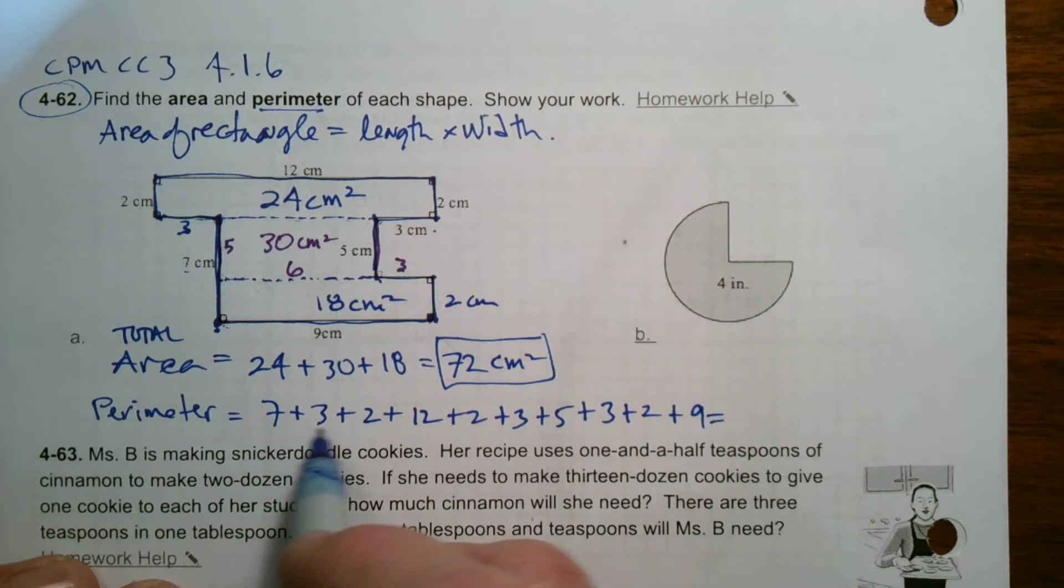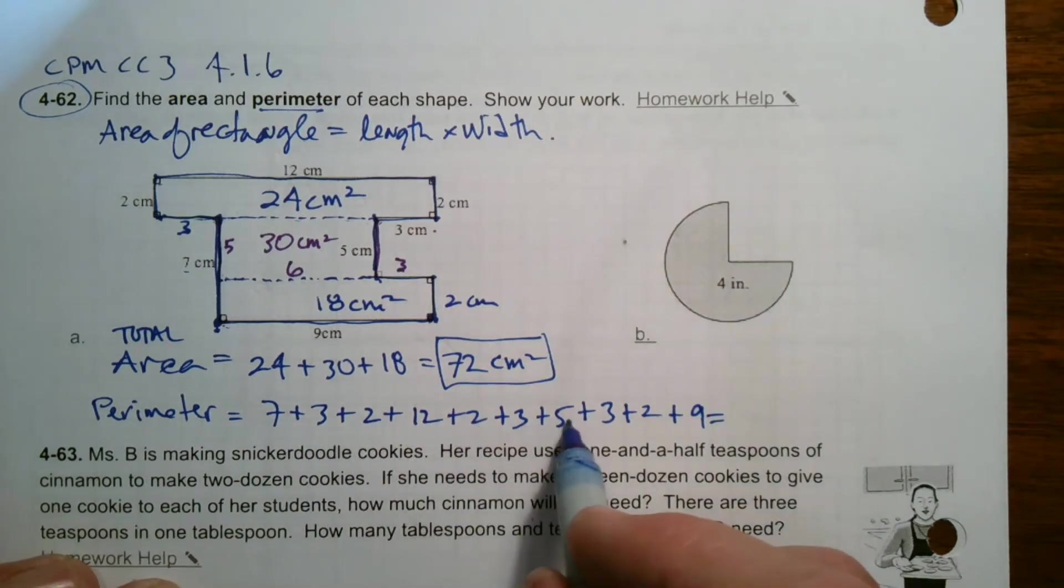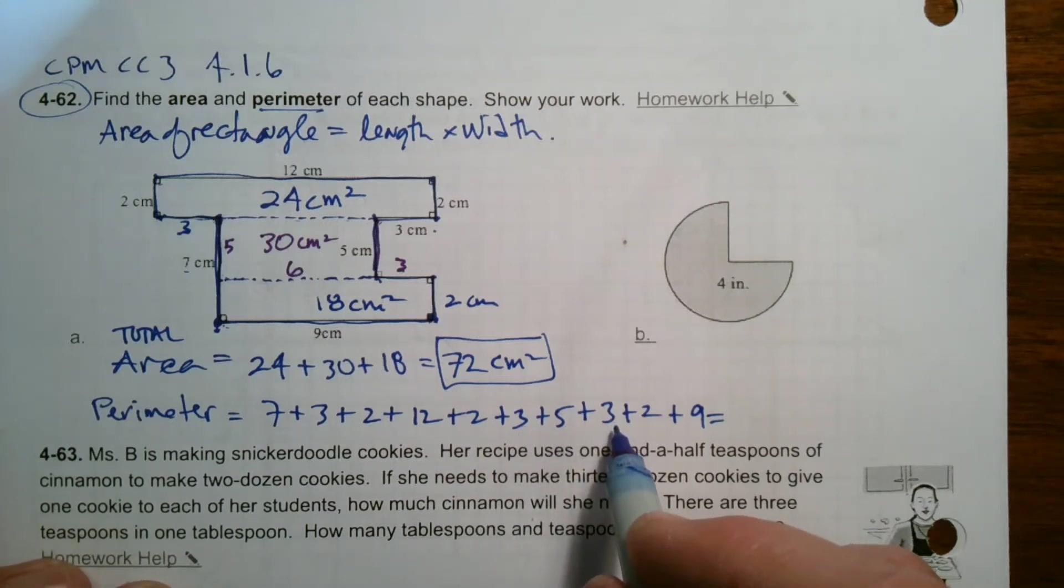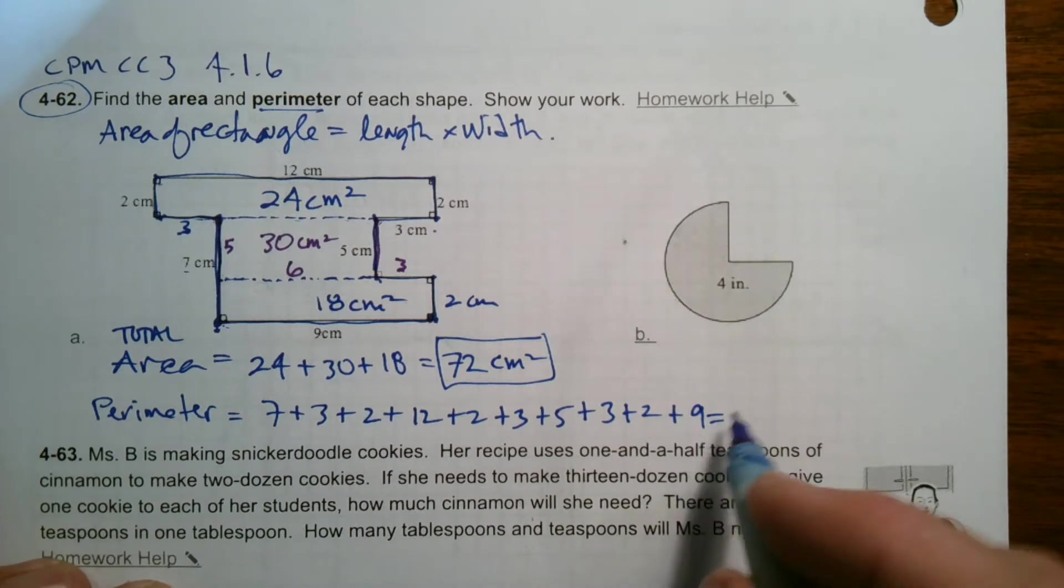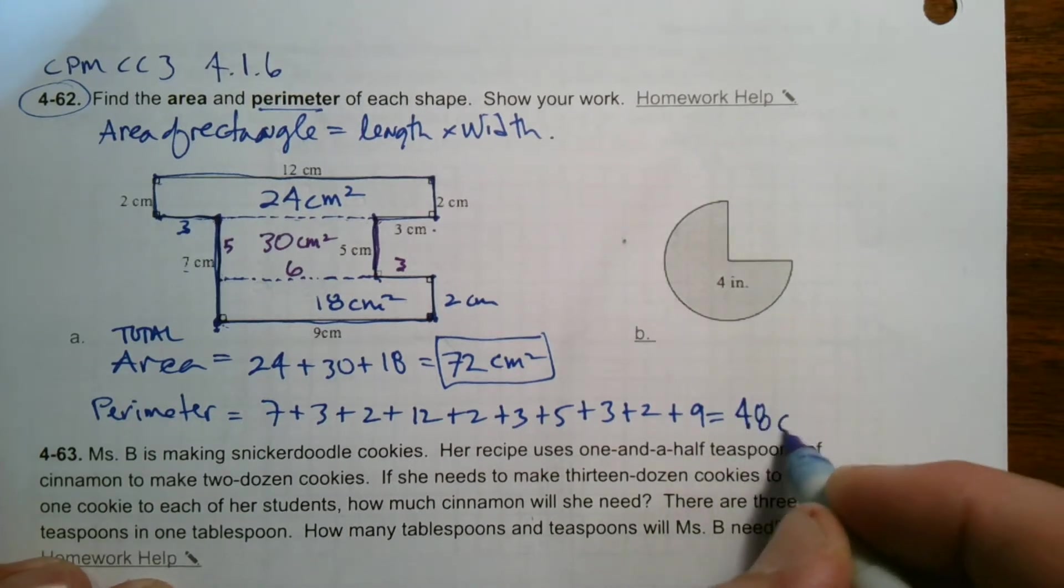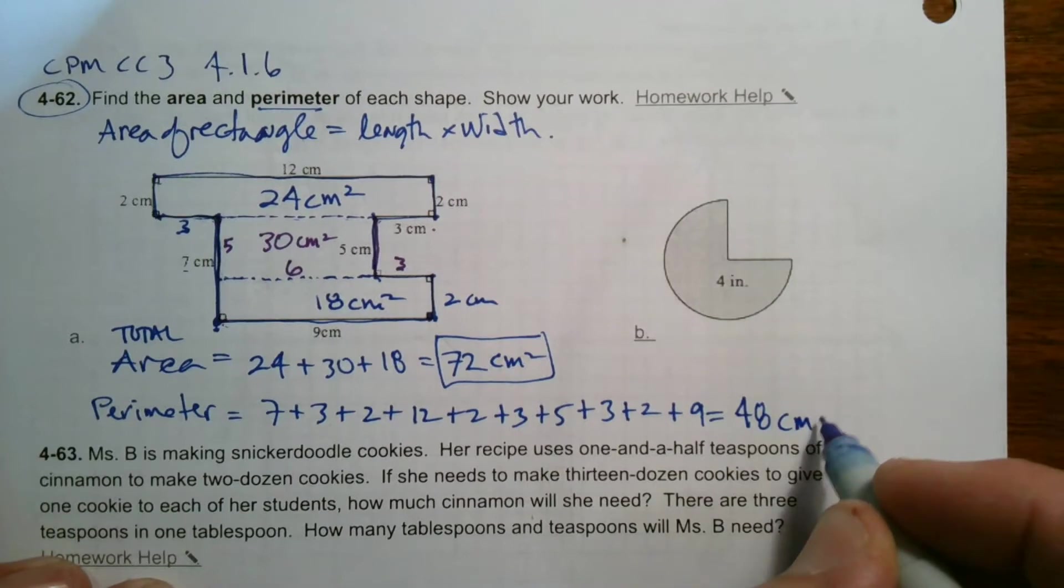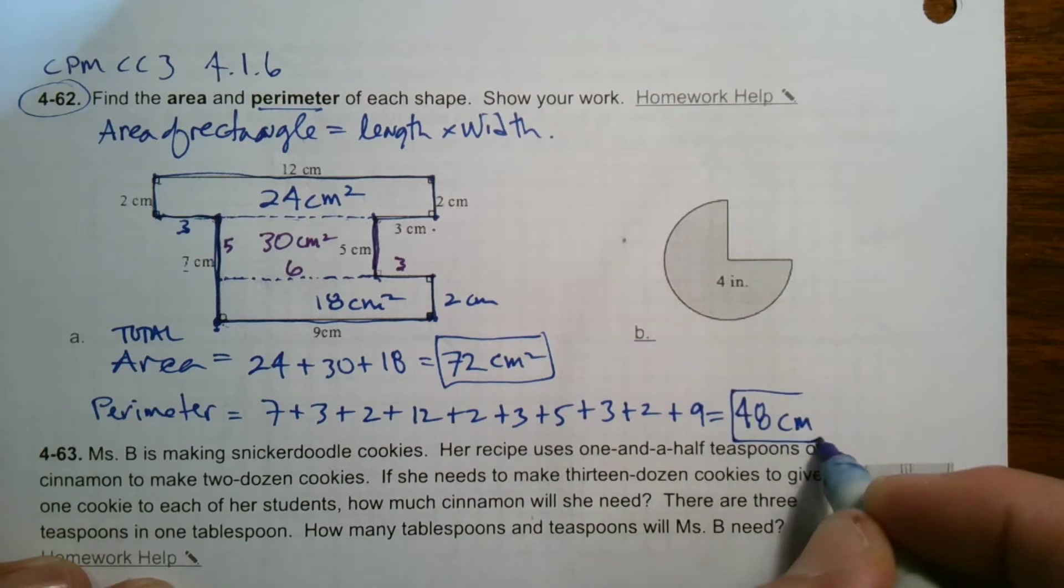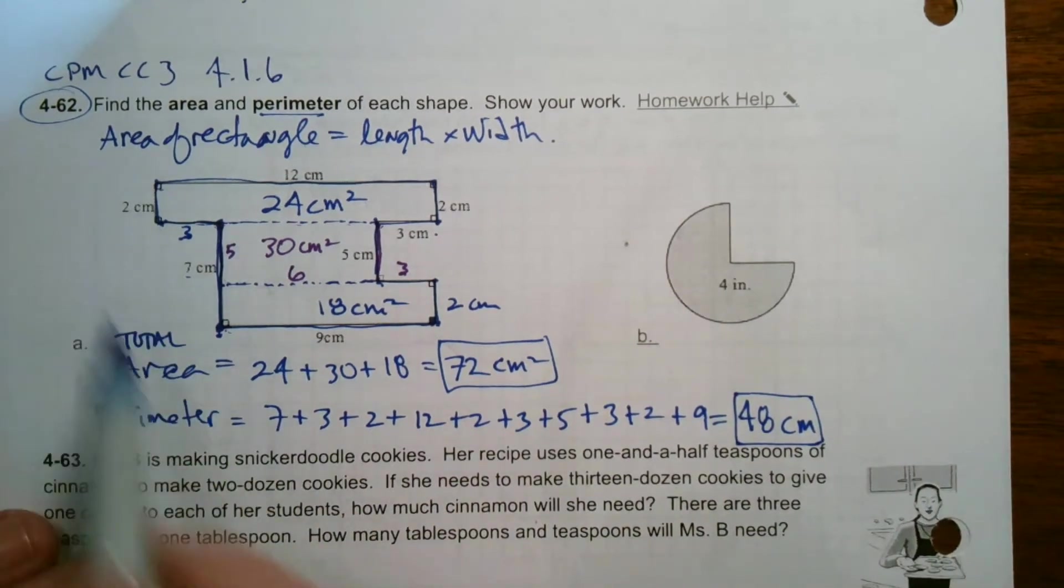So my total perimeter for this problem is just adding all those up. So quickly add those up. Let's see. 10, 12, 24, 26, 29, 34, 37, 39, then 48. So I have 48 and perimeter is just length linear, right? So there's no squared. It's just centimeters. So 48 centimeters of that perimeter. So there's the area and perimeter of that composite figure.